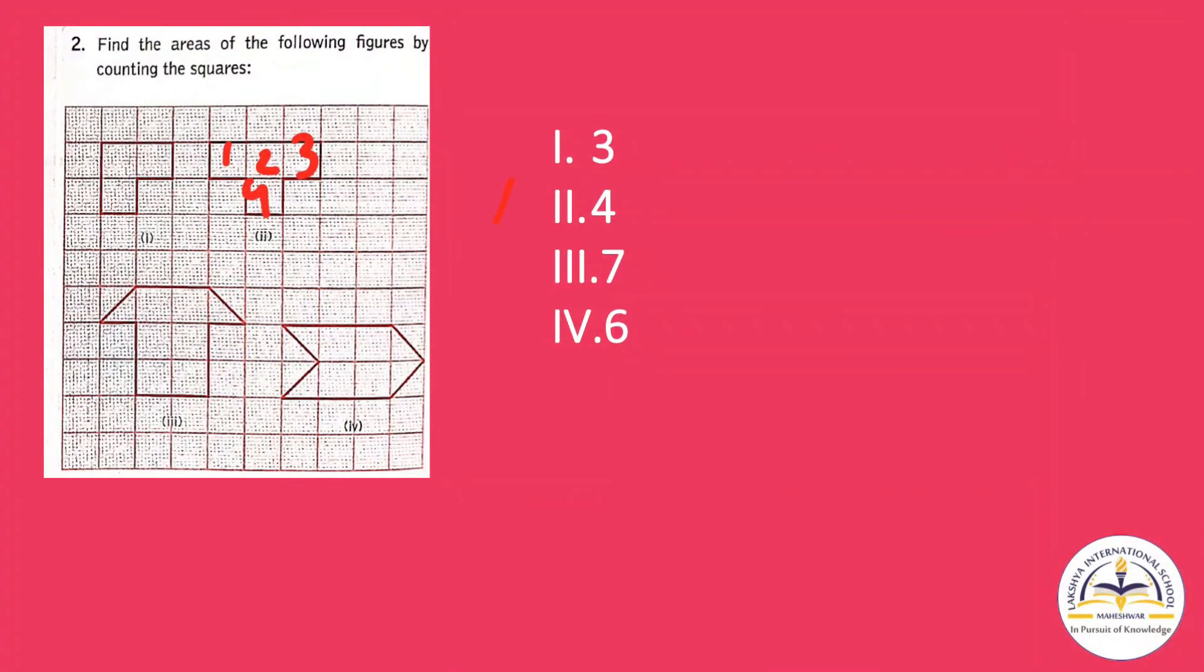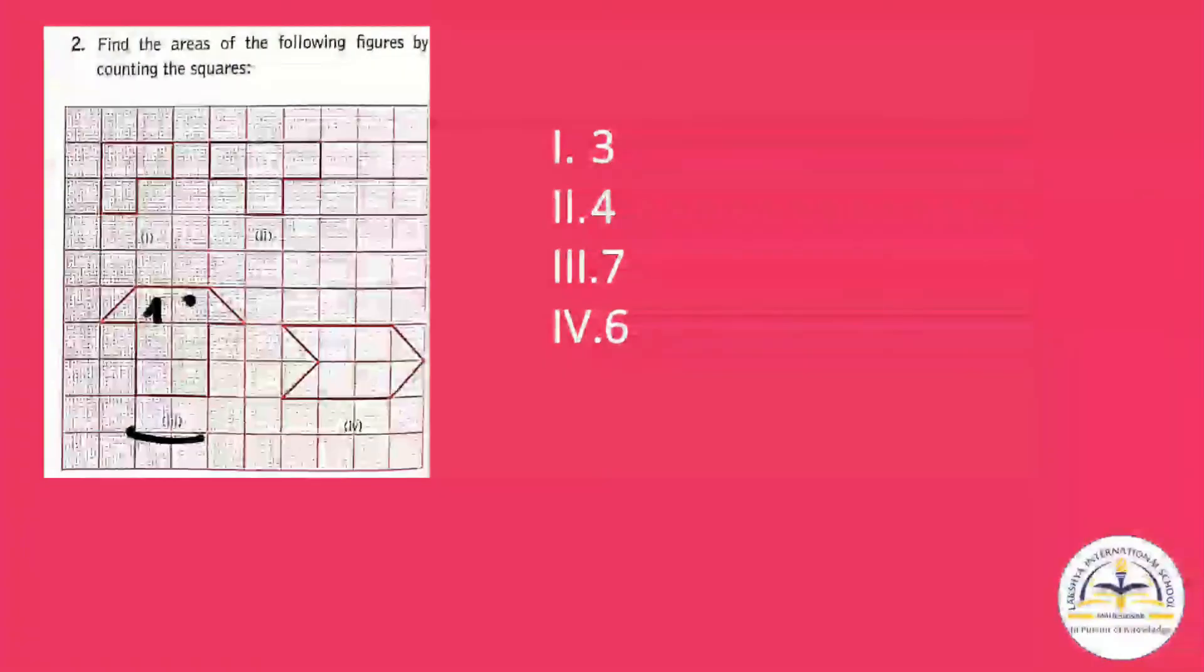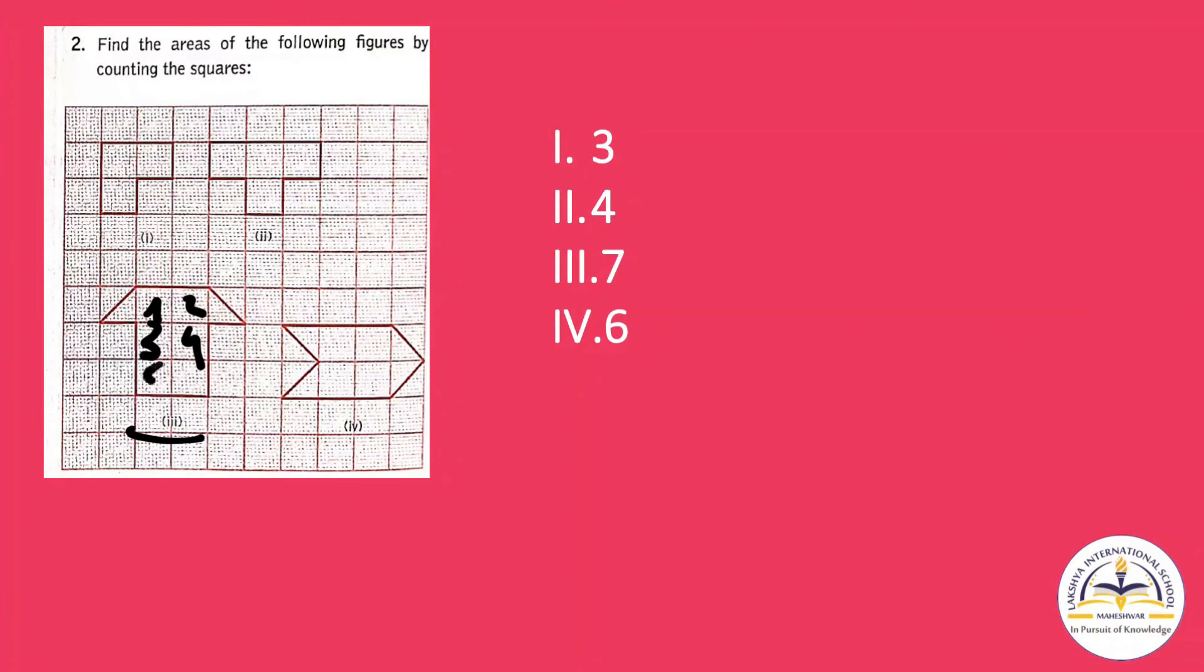Now the second one, how many squares it consists? One, two, three, and four. So four will be the answer. Now for the third question, how many squares are there? One, two, three, four, five, six.